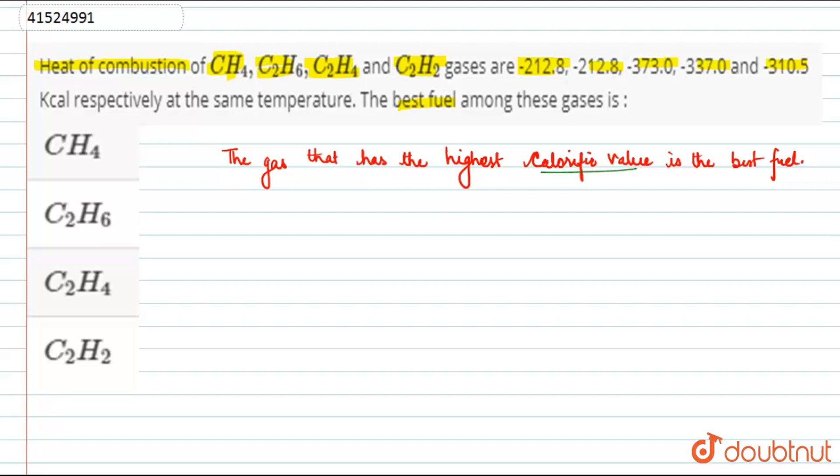So what is this calorific value? We can calculate this value by dividing delta H of combustion by its molecular weight.